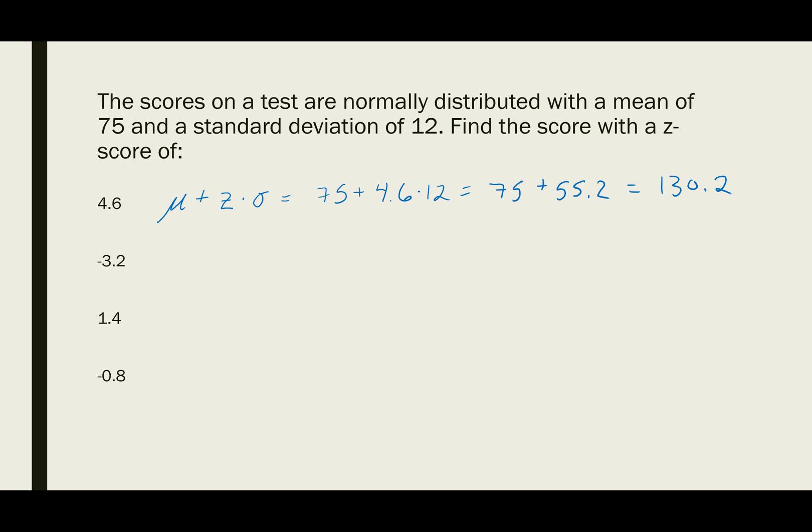The next one is negative 3.2. We take the mean and add the product of the z-score and the standard deviation. That's 75 plus negative 3.2, which means 3.2 standard deviations below the mean. Negative 3.2 times 12 gives us negative 38.4. So 75 minus 38.4 equals 36.6. The data value that is 3.2 standard deviations below the mean is 36.6.